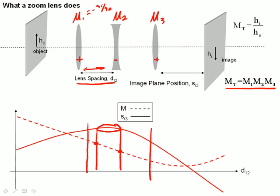But the size of the image given by the magnification is changing. With a set of curves that look like this, there is a region where this behaves as a zoom lens because the image position is not changing and the magnification is.